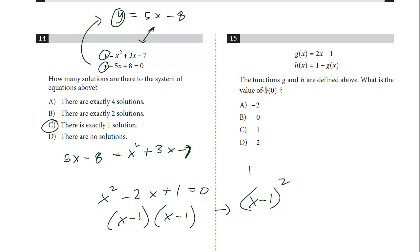Here we've got a function question. The functions g and h are defined above. What is h of 0? So before we can find h of 0, you see how the function h contains g. We're going to have to do g of 0.